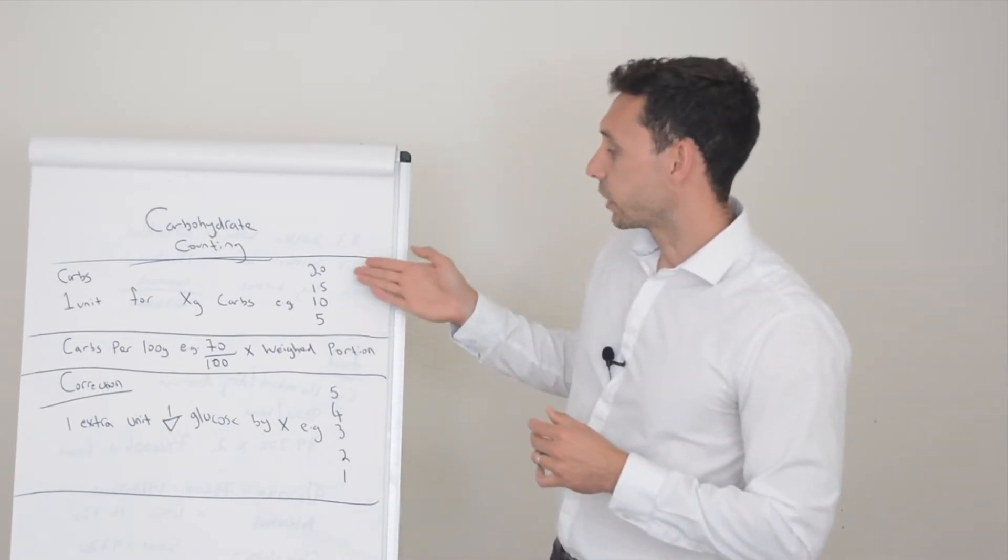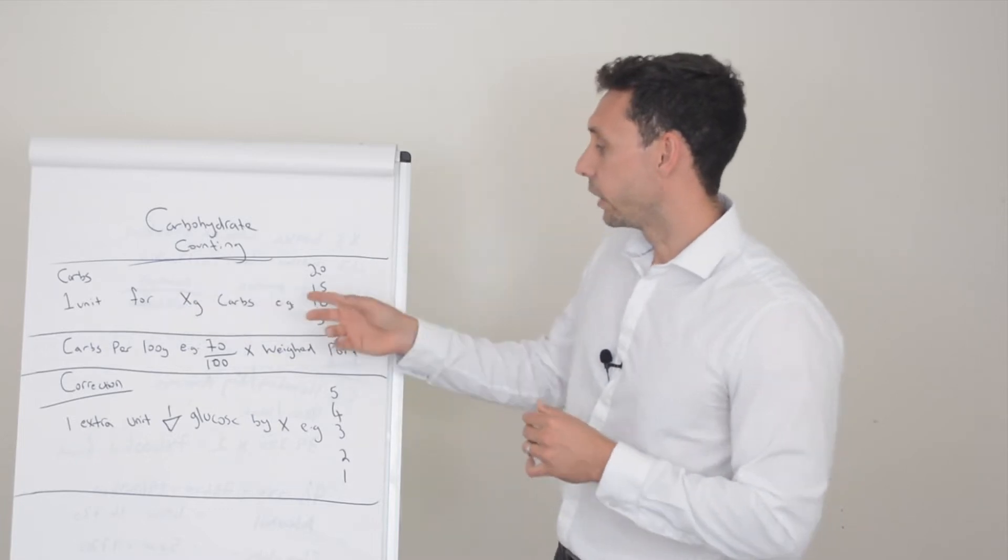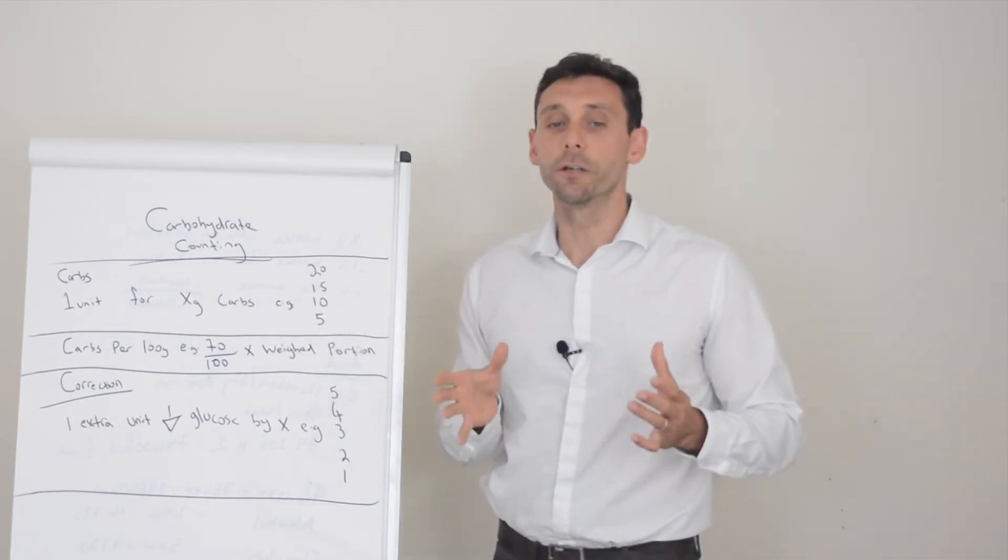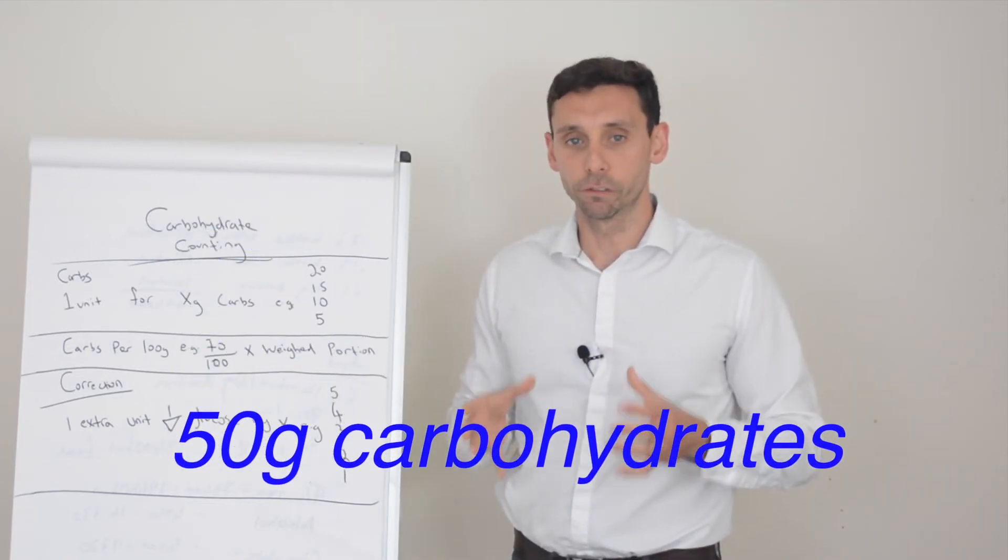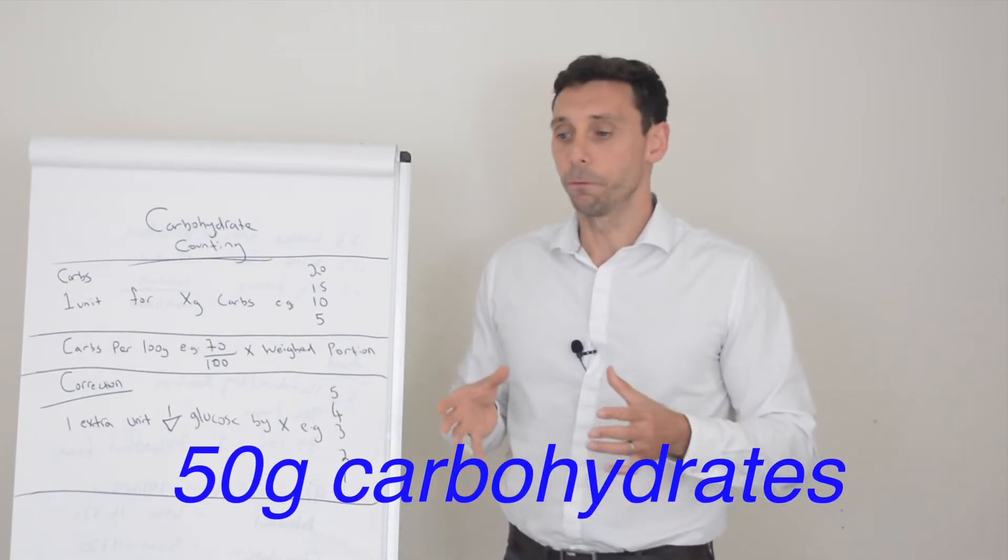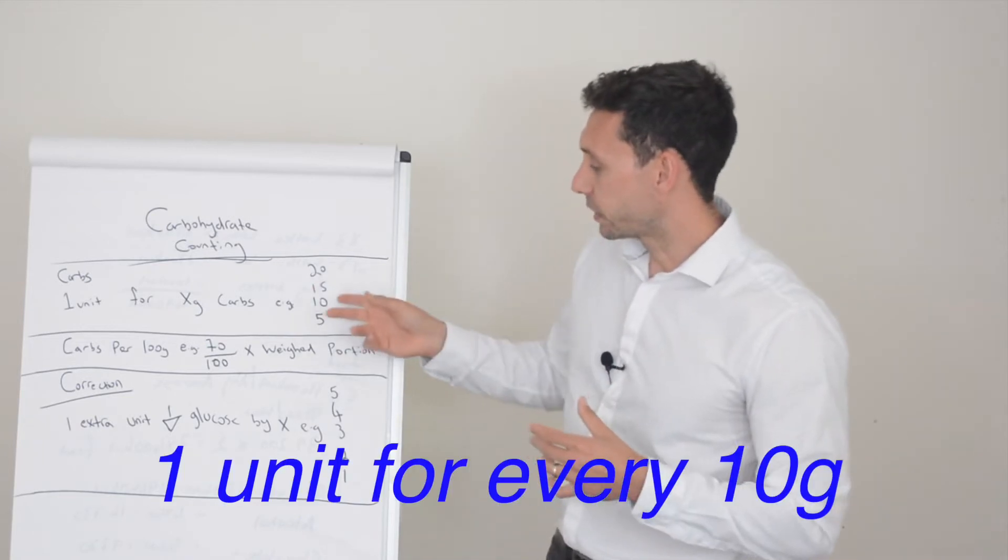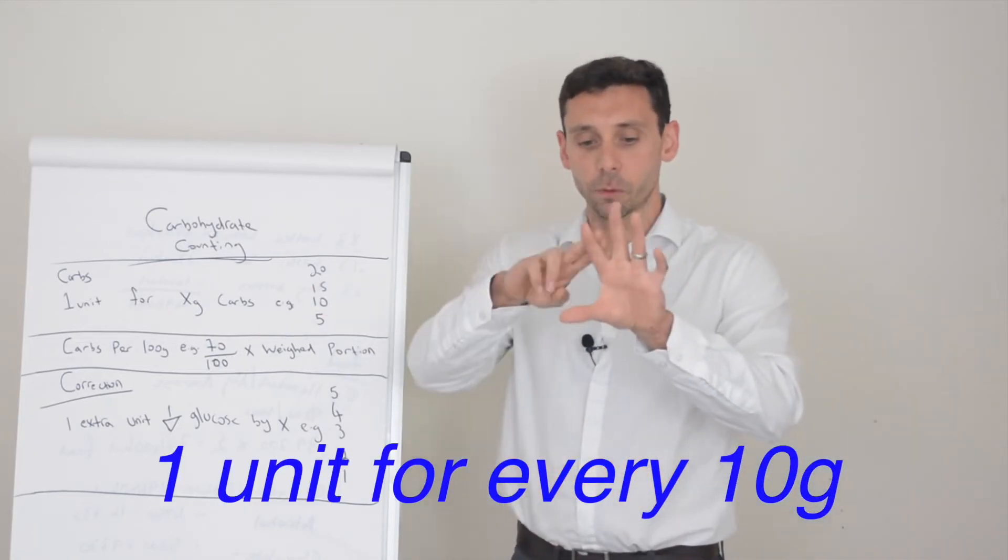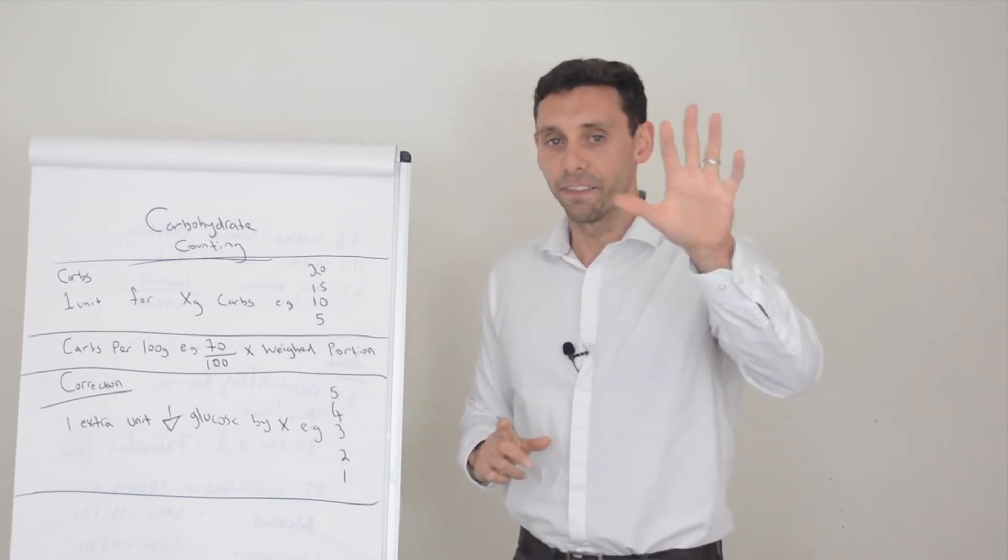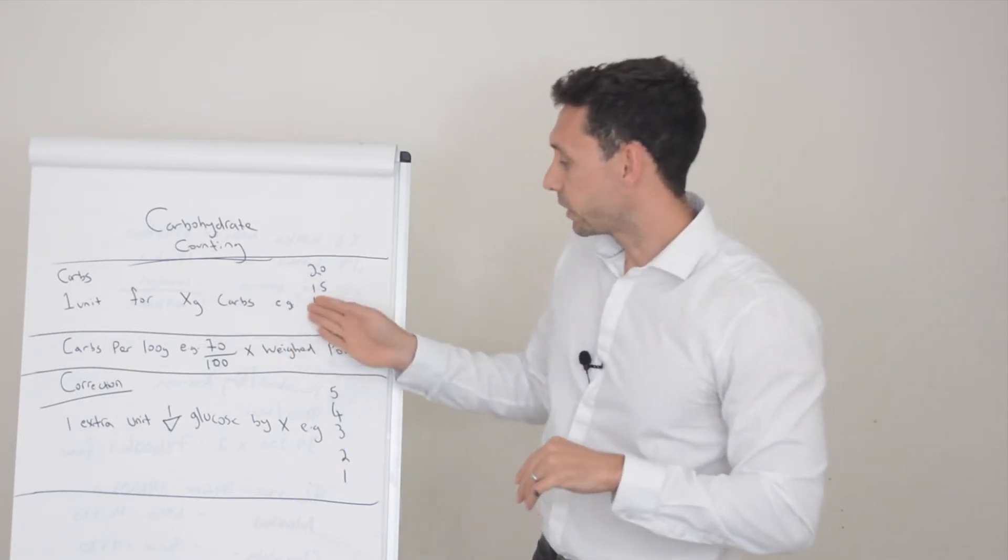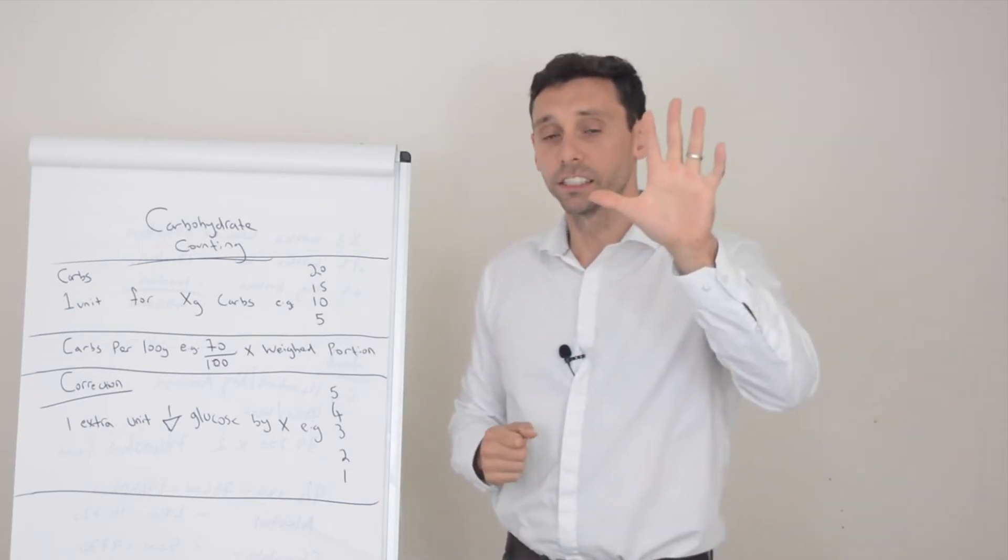Let's just say for example that you had a one unit for 10 gram ratio and then at your meal you calculate you have 50 grams of carbohydrate for that meal. So one unit for 10 so we have 10, 20, 30, 40, 50. So you have five sets of 10 at that meal. So it's one unit for 10 so you're going to give five units for that meal.